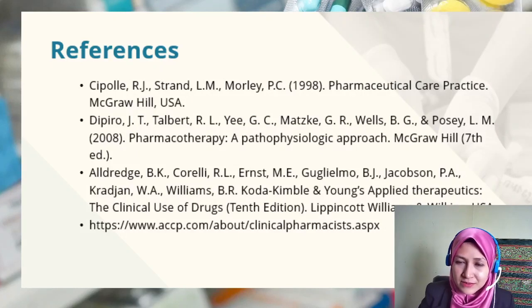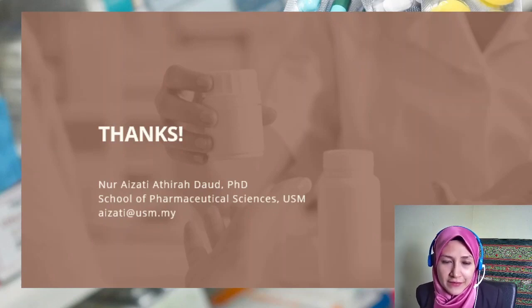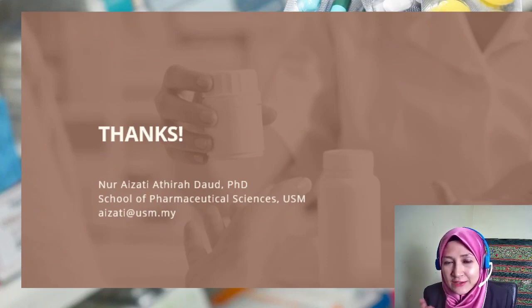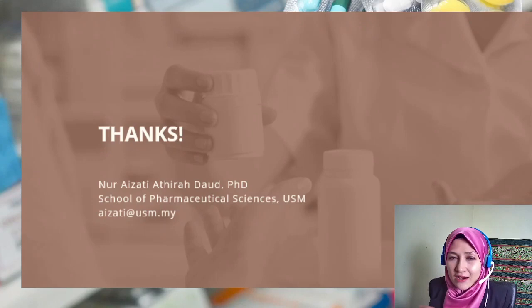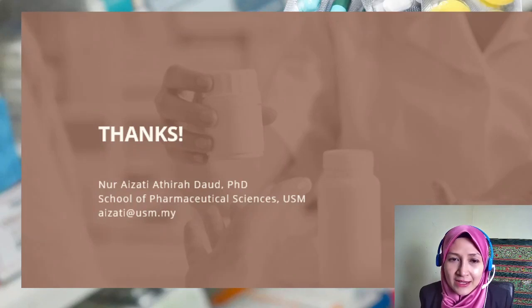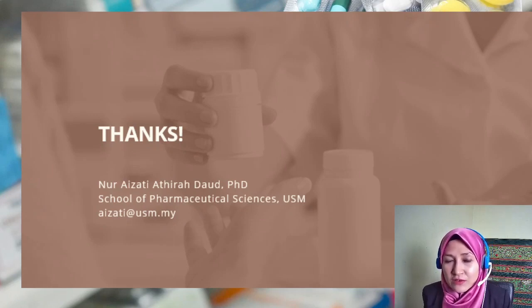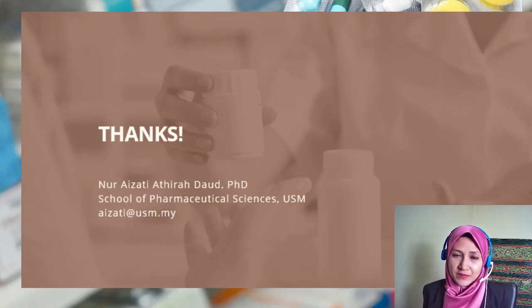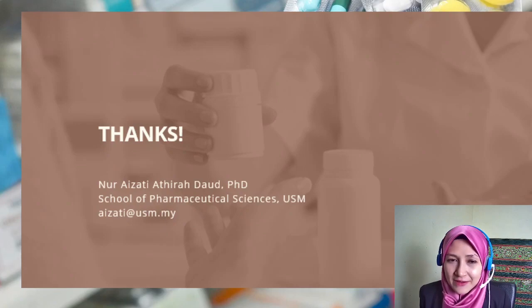That concludes the drug-related problems module. In this module, we have learned several types of drug-related problems that are evaluated during the assessment process in the SOAP plan. Following the identification of DRPs, we provide recommendations or a drug therapy plan to improve drug therapy and alleviate or prevent any drug-related problems. We then continue with the follow-up evaluation, considering who to monitor, which parameters to use, how frequently to monitor, and what possible outcomes the patient can have. This wraps up the whole SOAP process in drug therapy management for a clinical pharmacist. Thank you very much.